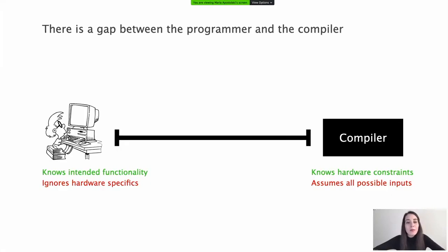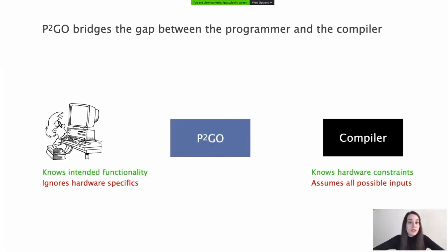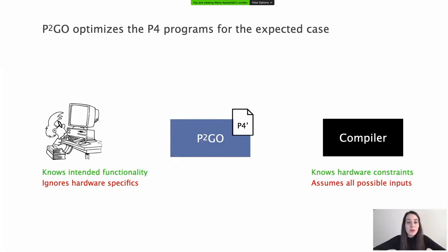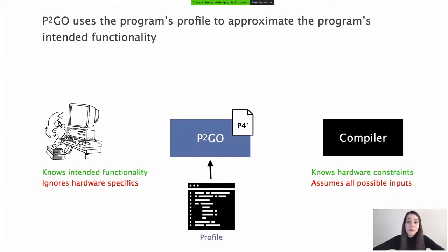In essence, there is a gap between what the programmer intended to achieve with the program and what the compiler considers when compiling it. With this in mind, we built P2Go, a system that bridges this gap by generating programs whose compilation is easier to achieve because their scope is limited to the expected case. Instead of putting the burden on the programmer, P2Go generates its programs automatically, guided by the program's profile. The program's profile describes the program's functionality in practice and can be obtained by observing the behavior of the initial program when presented with realistic traffic.